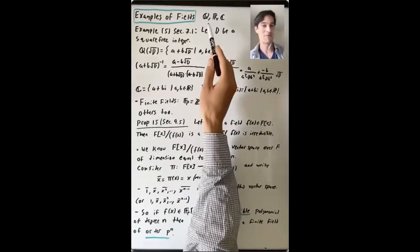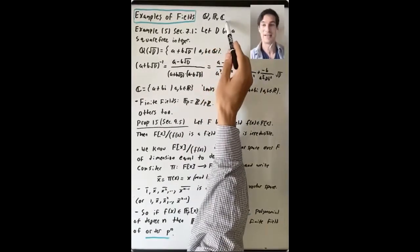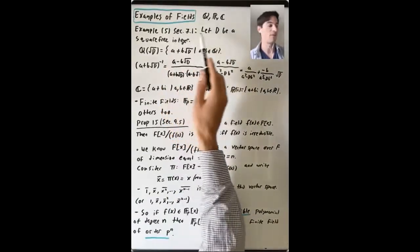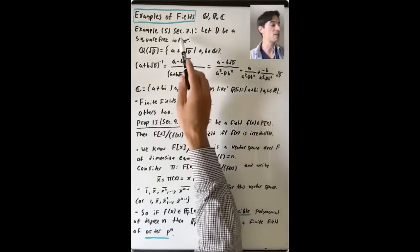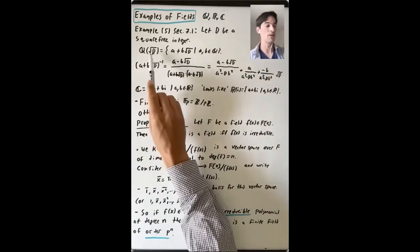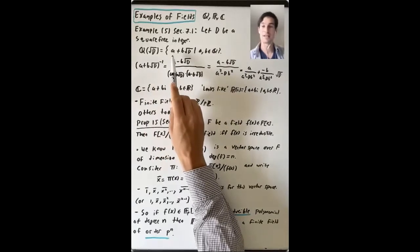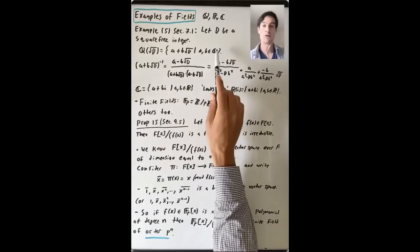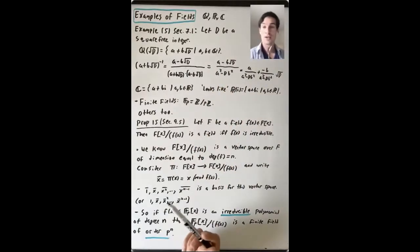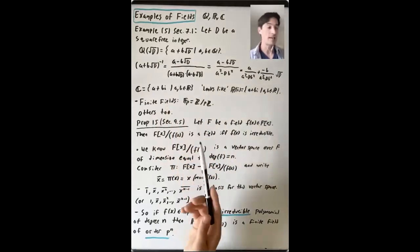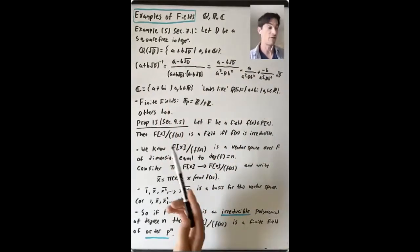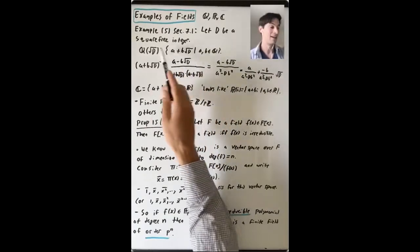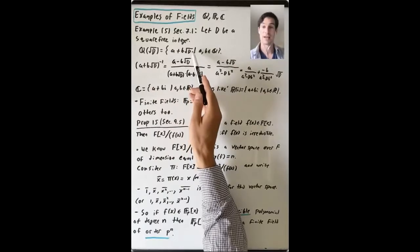Some examples that come up frequently are Q, R, and C. We saw also an example in section 7.1, example 5, where you take any square-free integer d and you can look at Q adjoin square root of d, which is the set of all things of the form a plus b times the square root of d, where a and b are rational numbers. One thing that's not obvious right away is that this actually is a field — that every element a plus b√d actually has a multiplicative inverse of this form.